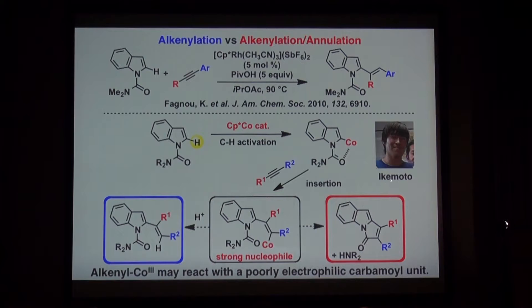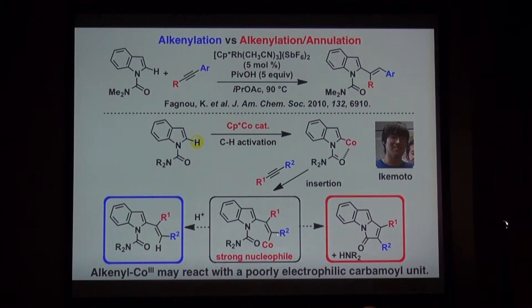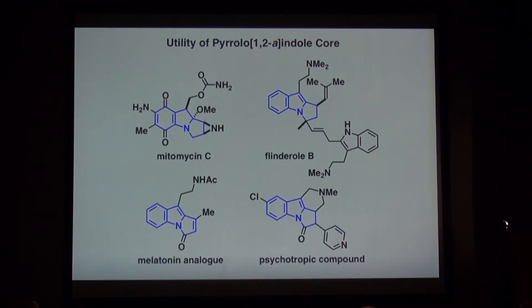Mr. Ikemoto in my group designed this reaction. We imagined that if cobalt activates the C-H bond of indoles and then insertion to alkyne proceeds, it generates the alkenyl-cobalt intermediate. If the reaction ends up with proto-demetallation, it affords alkenylation products — same as the rhodium case reported by Professor Fagnou. But if this is a very strong nucleophile, it may react with a poorly electrophilic carboxamide group to generate pyroindolone cores, which is a very important structural core and worth trying.